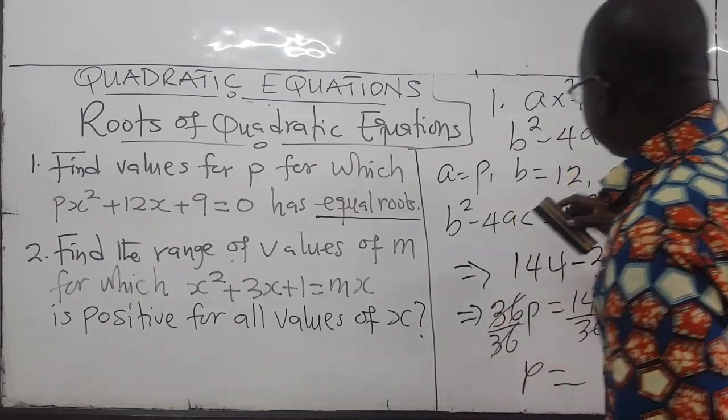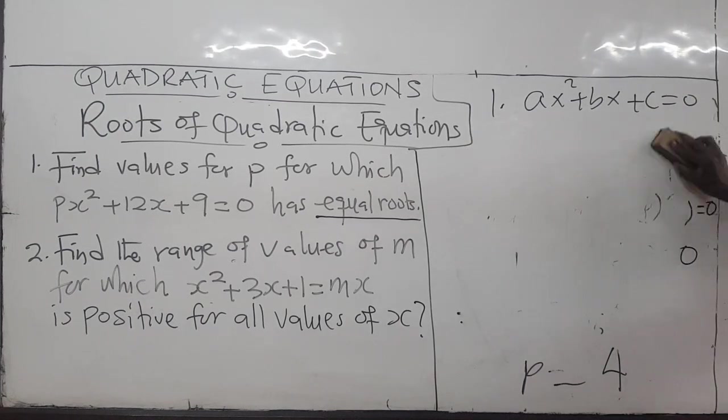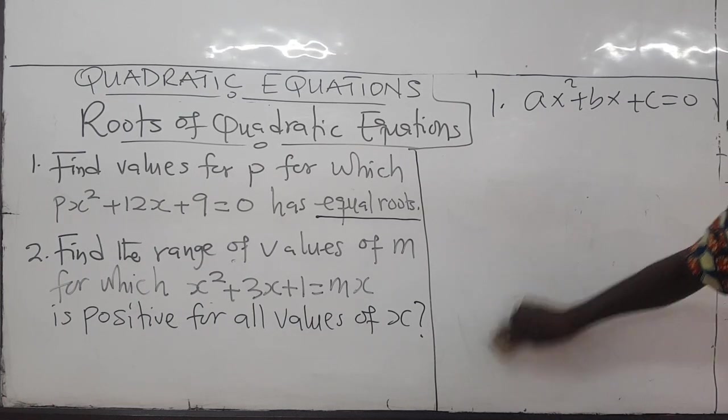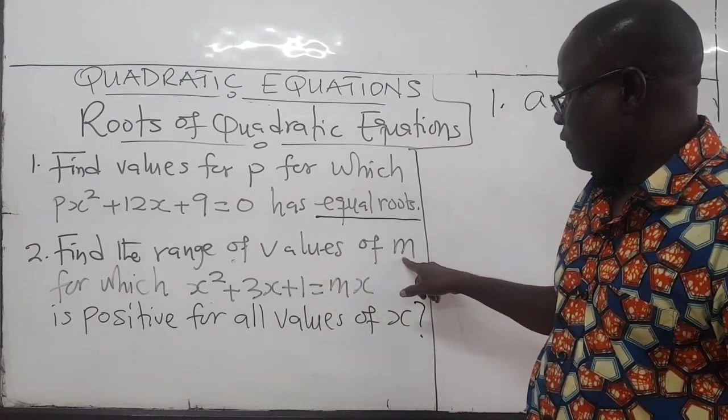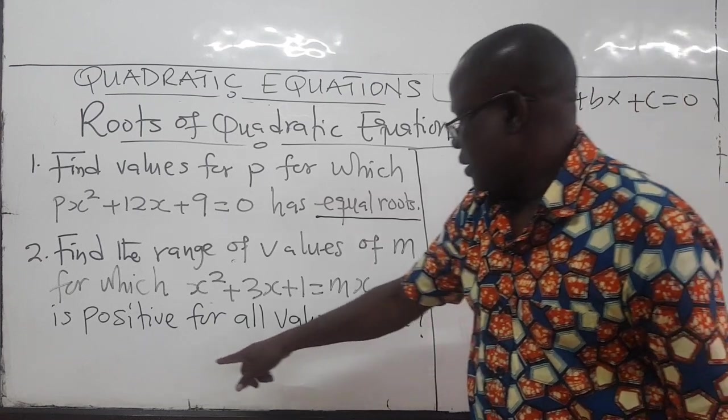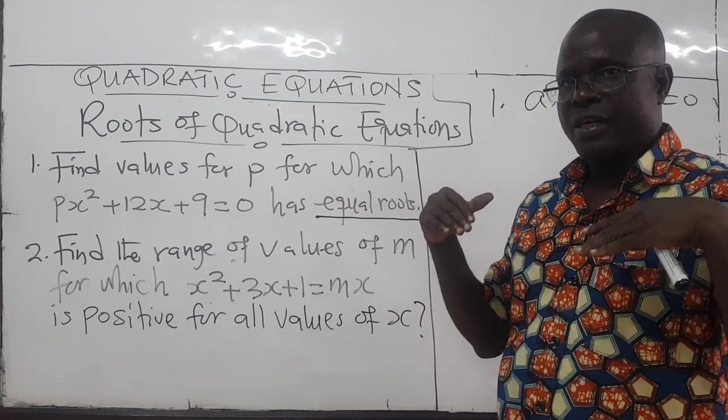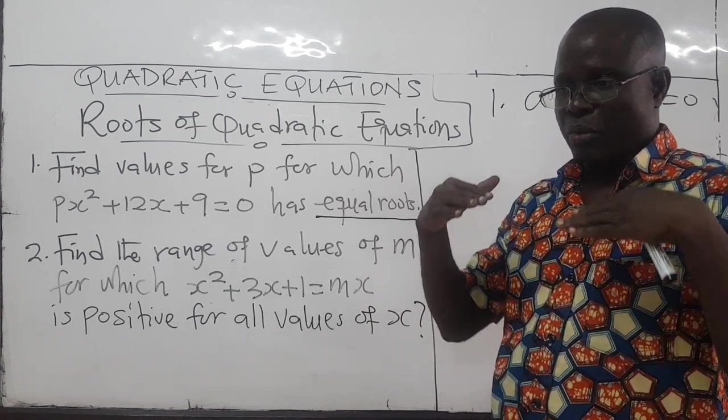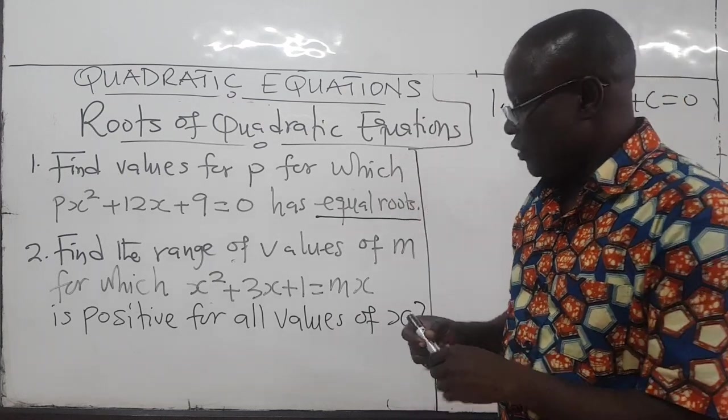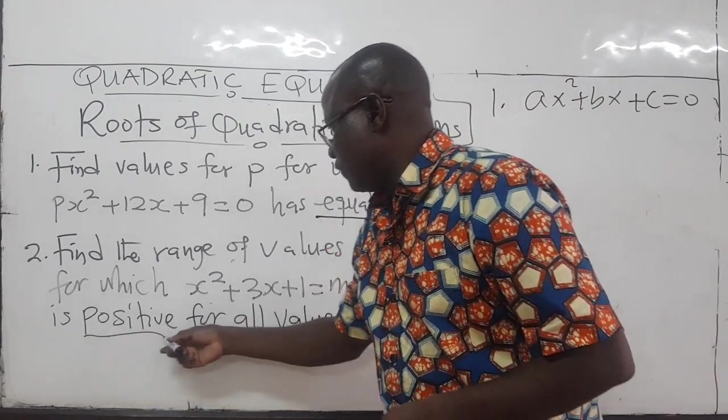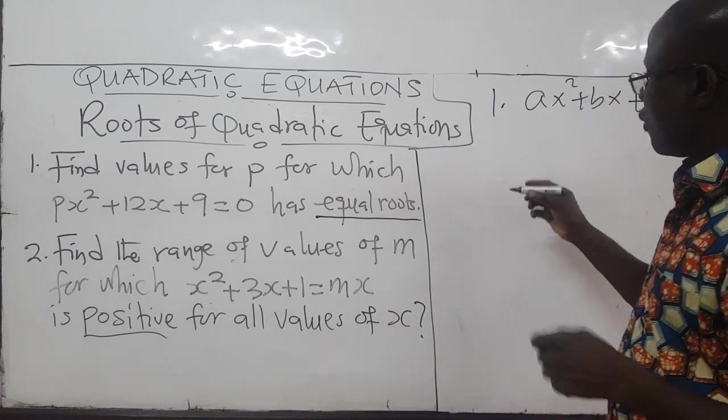Then the second question. The second question says we want to find a range of values of M for which this quadratic equation is positive. This is important. The equation is positive. Remember we said that for complex roots, the equation is positive, it's above the x-axis, or negative below the x-axis. So once you see the quadratic equation to be positive, it means that you want the equation to be above the x-axis. And that is the case where you have complex roots.